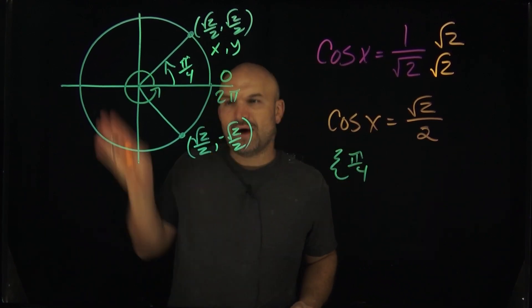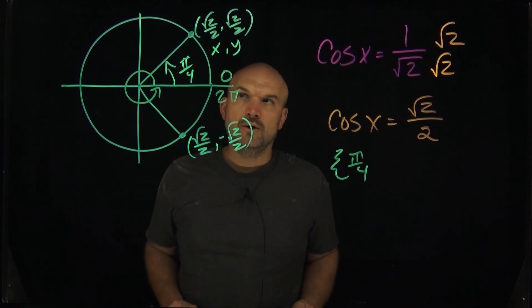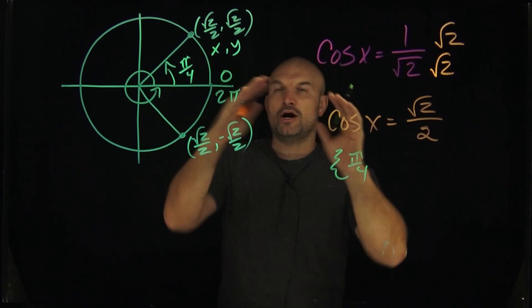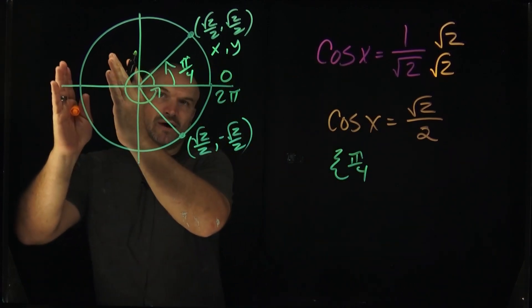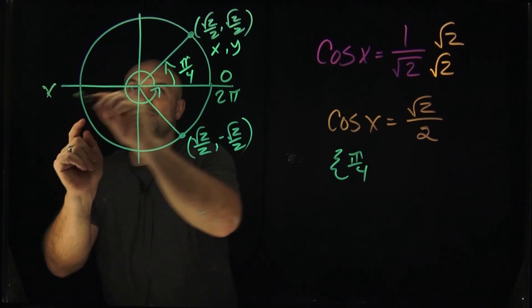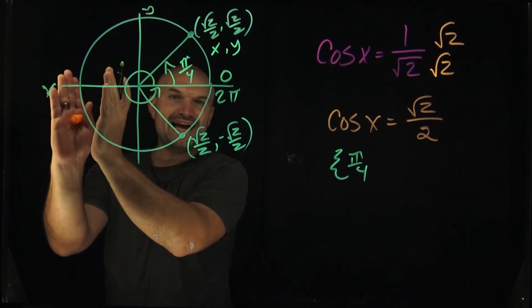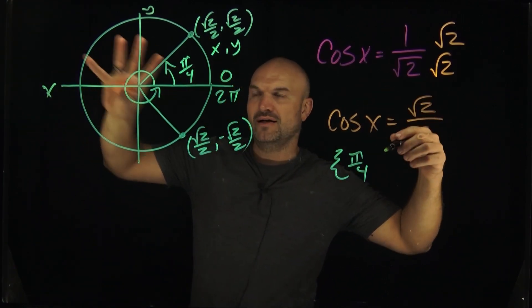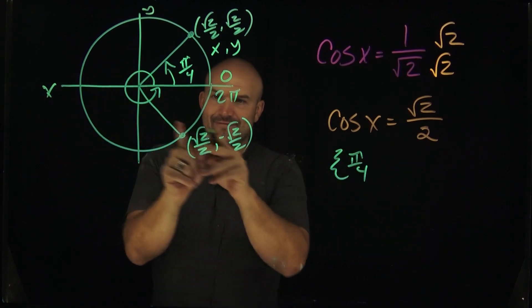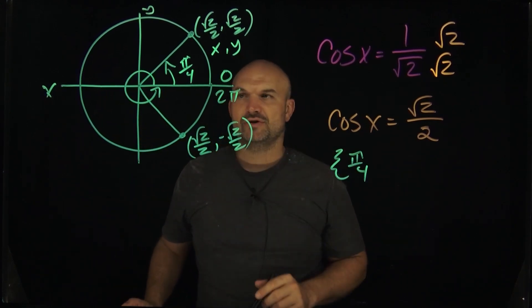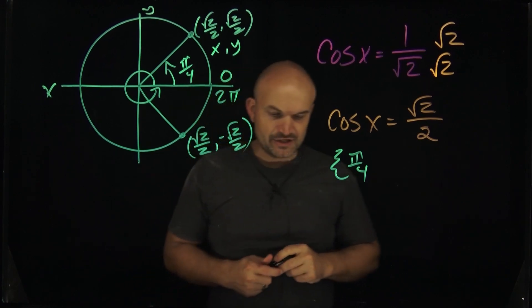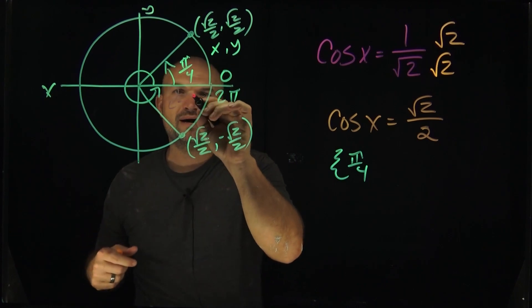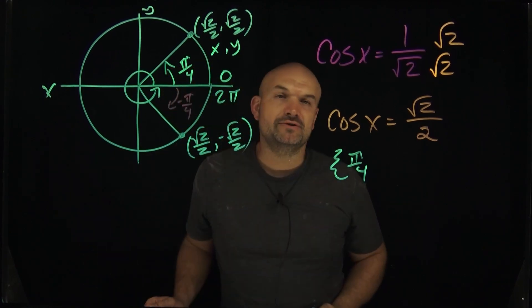Now what about the other angle? The key is knowing the signs in each quadrant of the unit circle. In the first quadrant, x and y are always positive. In the second quadrant, we're to the left of the y-axis, so all x values are negative. So for a negative √2/2, that's where I would look. One mistake students make is they'll do negative pi over 4, because they see pi over 4 and think to negate it.